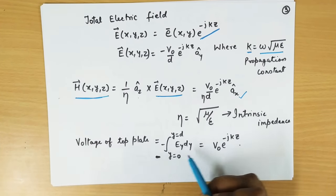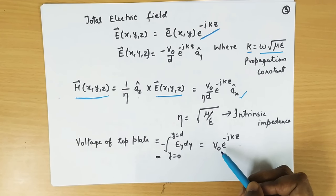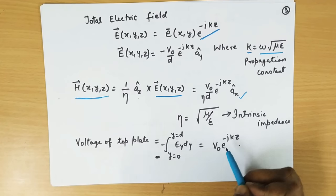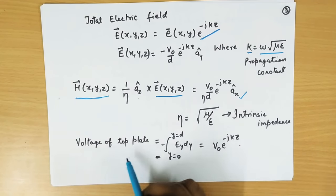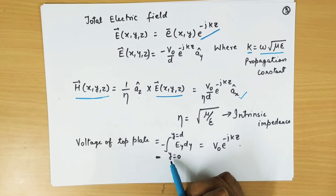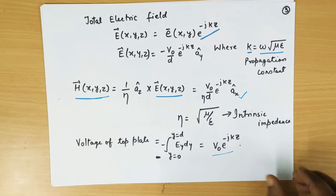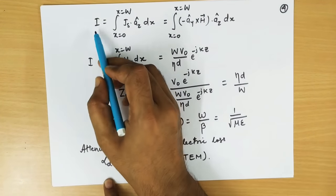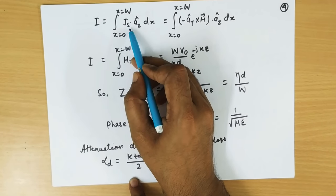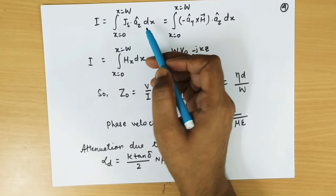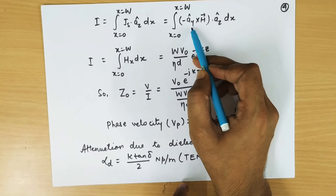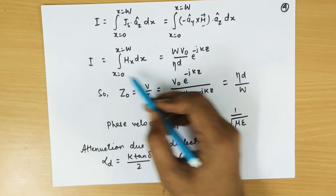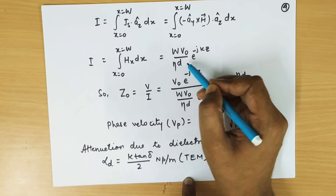To calculate the voltage on the top plate, we have assumed the voltage is V0, but that only accounts for x and y variation. If we include z variation, there is an e to the power minus jkz factor. We can also find voltage using the integration of E_y dy from 0 to D. To find current, we use the surface current density formula, which involves the cross multiplication of the unit vector and the magnetic field, giving W times V0 over (eta times D) times e to the power minus jkz.